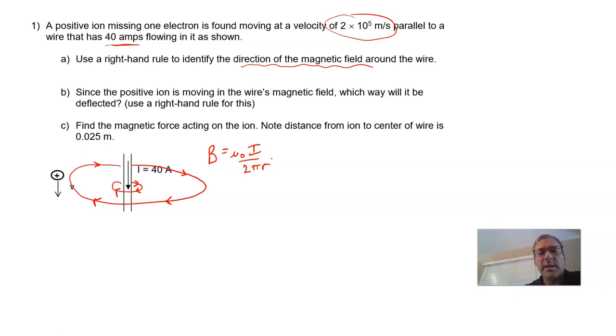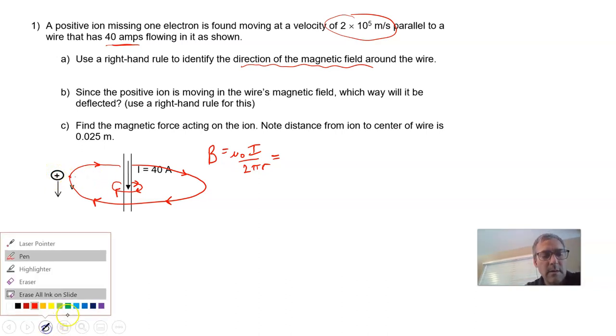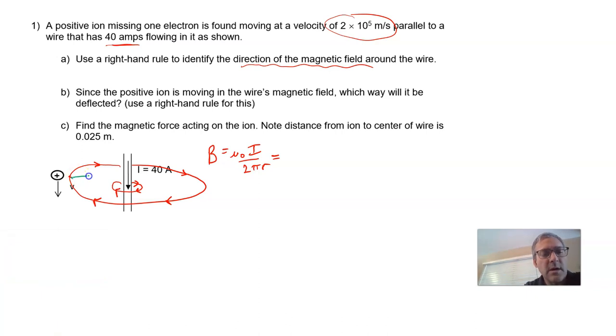And if you work that out, magnetic field at the position over here where that moving charge is, that distance away. This distance here, that being 0.025 meters.